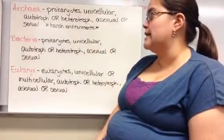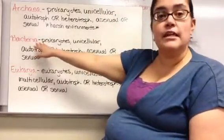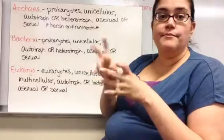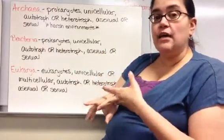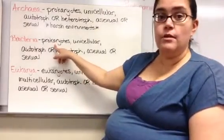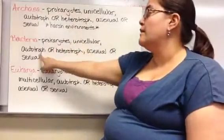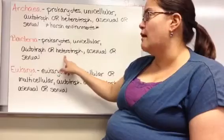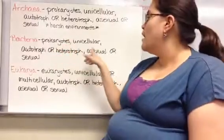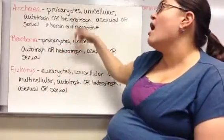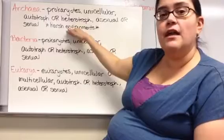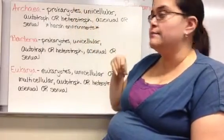The second domain is Bacteria — the bacteria you typically think of, like the bacteria that helps make yogurt, E. coli that makes you sick, or sinus infection bacteria. They are prokaryotes with no nucleus and are all unicellular. They can be autotrophs or heterotrophs, and they can reproduce asexually or sexually. Bacteria and Archaea share many similar characteristics, with their extreme environments being the main distinguishing focus of Archaea.